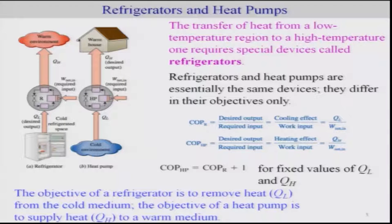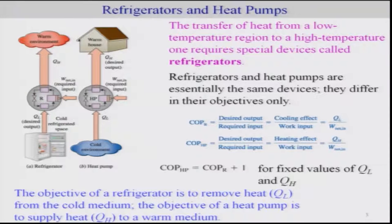The refrigerator and heat pumps are essentially the same device and they differ in their objectives only. The refrigerator is mainly to have a cooling effect, and thus the desired output is a cooling effect, whereas the heat pump has a desired output of a heating effect. The objective of a refrigerator is to remove heat from the cold medium, and the objective of the heat pump is to supply heat to a warm medium.